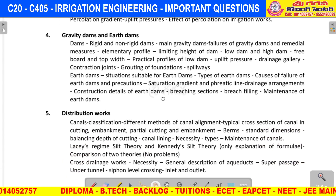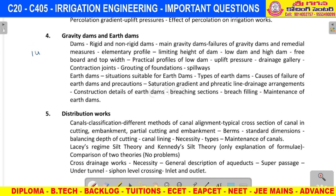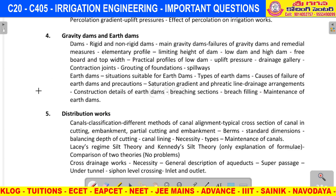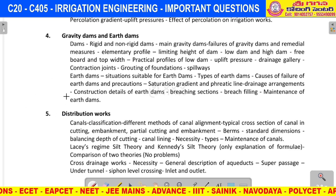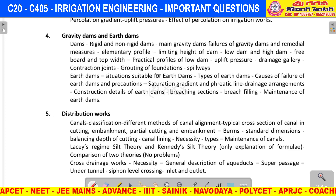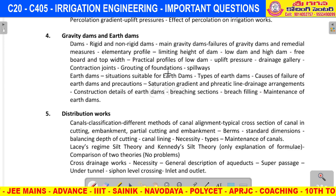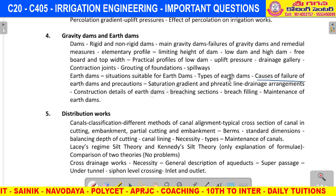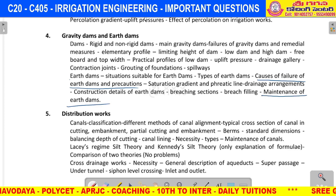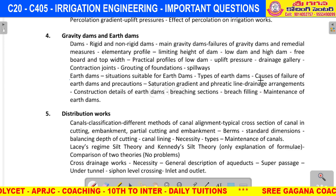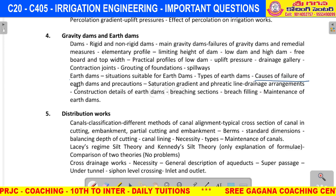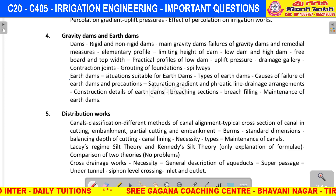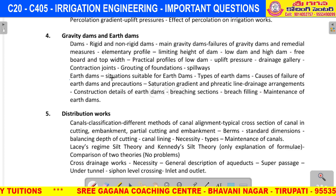Fourth unit — gravity dams — very very important, 14 marks. Gravity dams and earth dams. Types of earth dams and causes of failure of earth dams, maintenance of earth dams. Earth dam types, causes of failures, and maintenance work — this is a 10-mark question in the fourth unit.